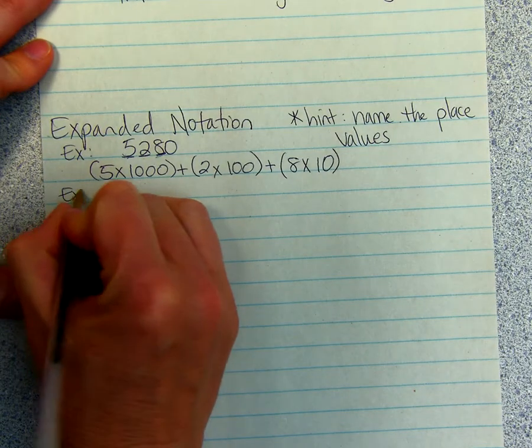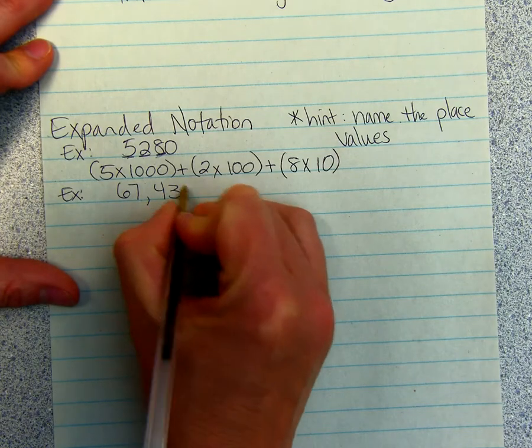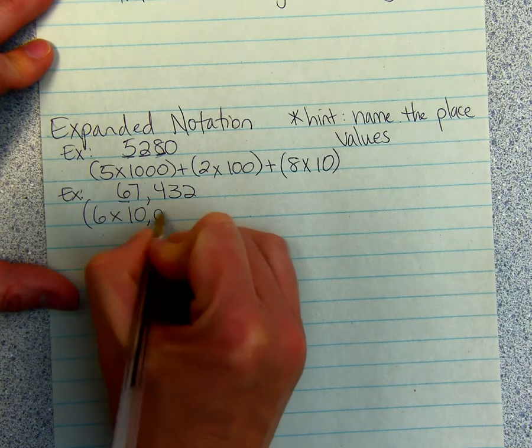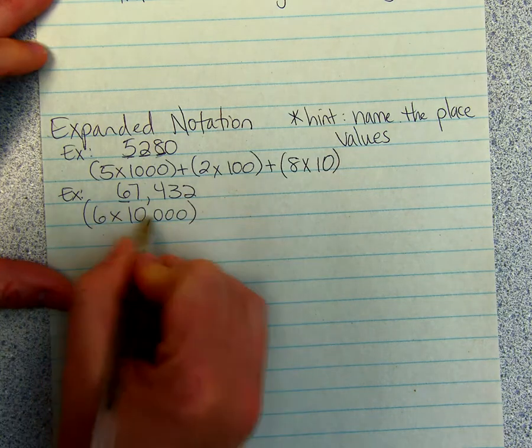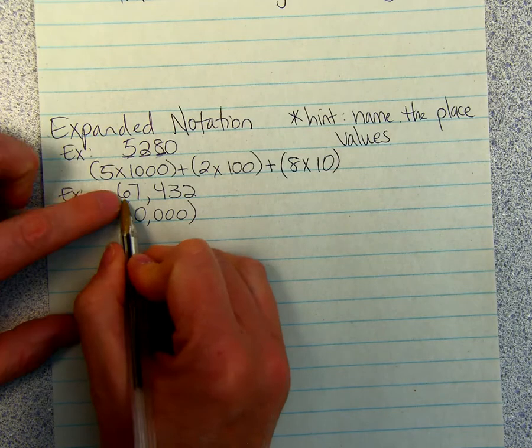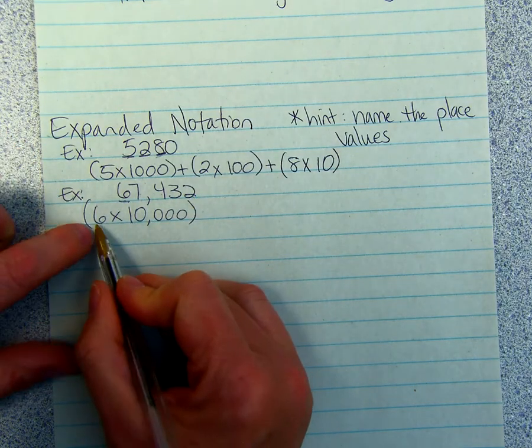Here's another example for Expanded Notation: 67,432. Notice that the 6 is in the 10,000 spot. So we do 6 times 10,000. Notice here's our 6, and there's 1, 2, 3, 4 numbers after it. When we do 6 times, it's 1 with 4 zeros.